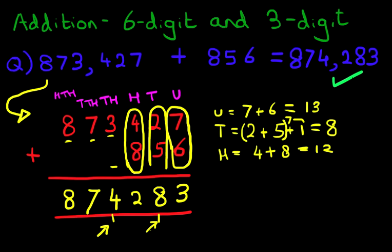That is correct. So that is how we do addition of a 6 digit and a 3 digit number using the vertical format.